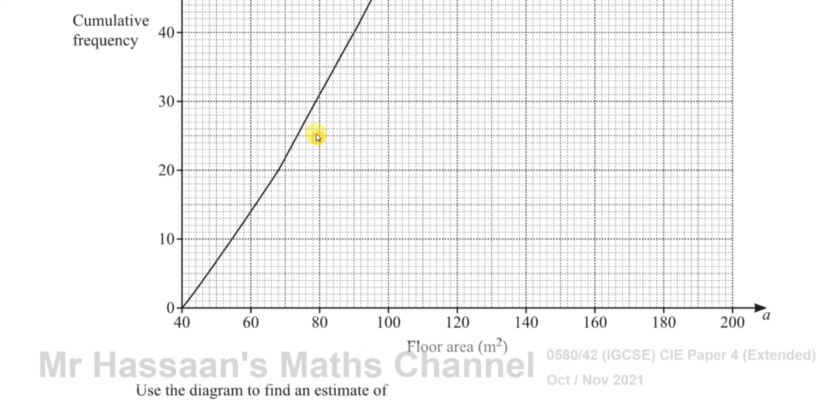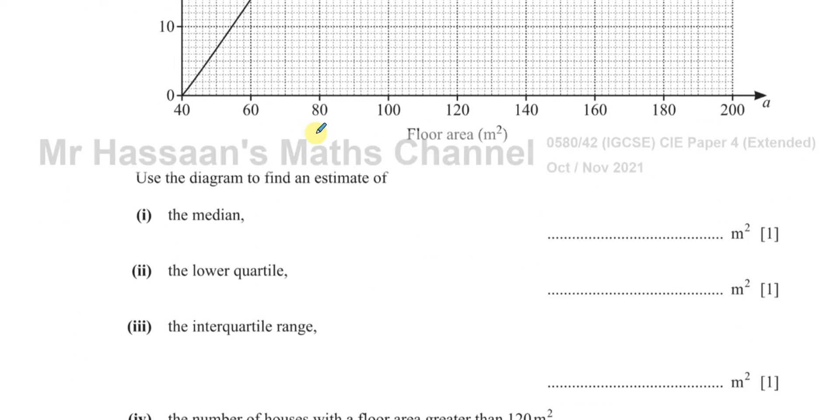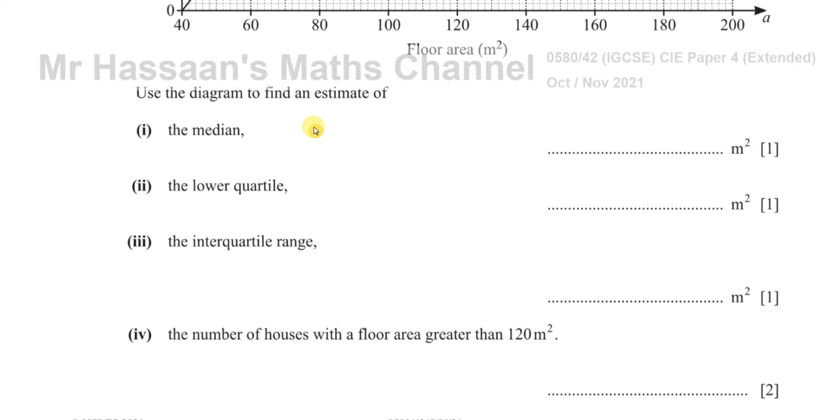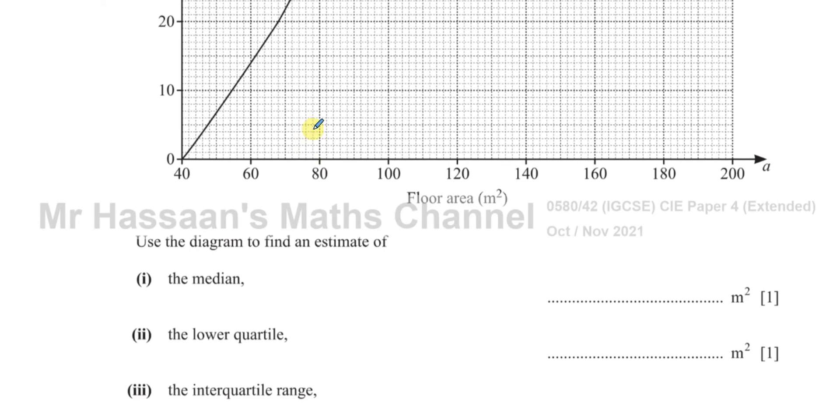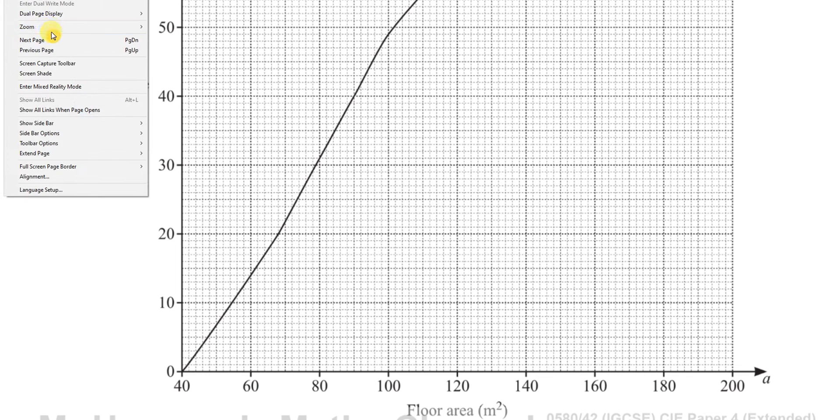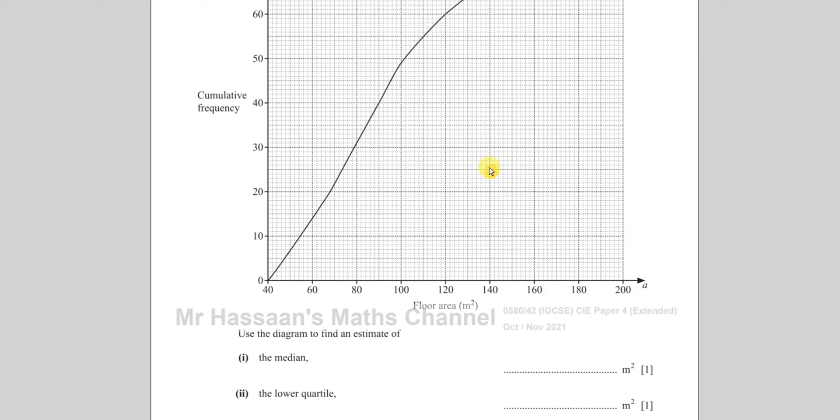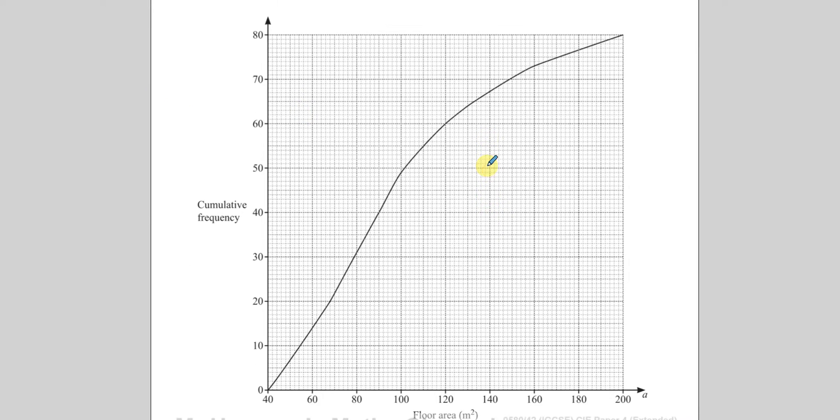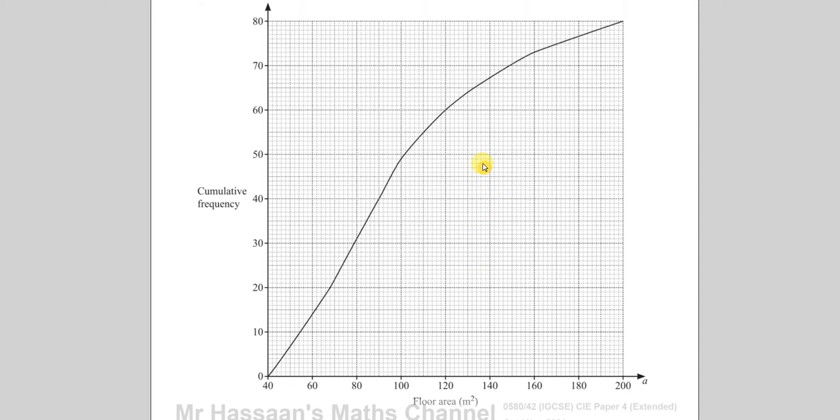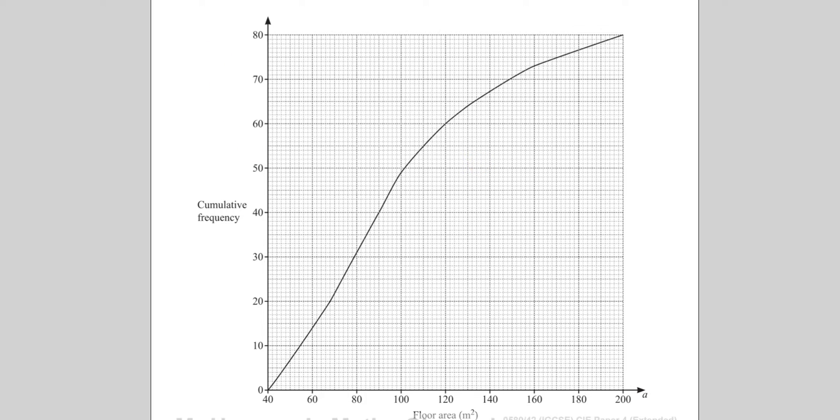We've got to use the diagram to find estimates of the median, the lower quartile, the interquartile range, and the number of houses with the floor area greater than 120 meters squared. I'm going to zoom out a little bit so it fits on my screen, the whole graph. So we've got to find an estimate of the median.